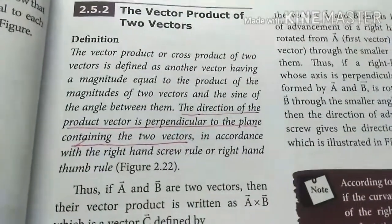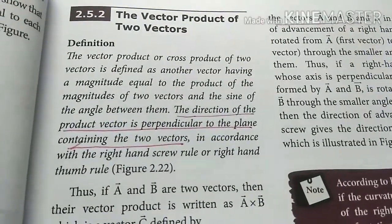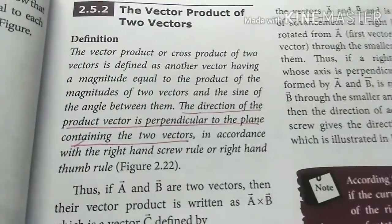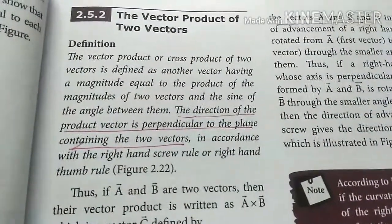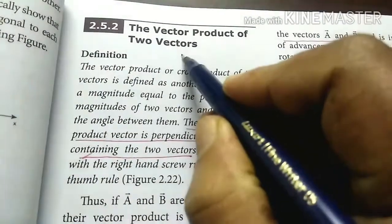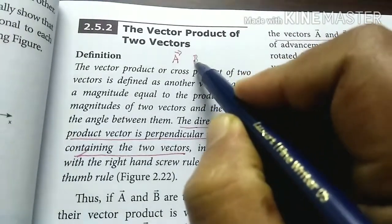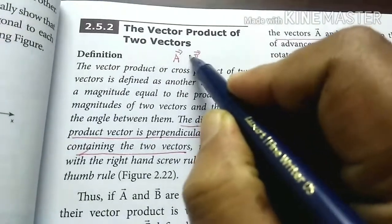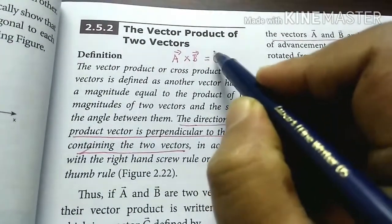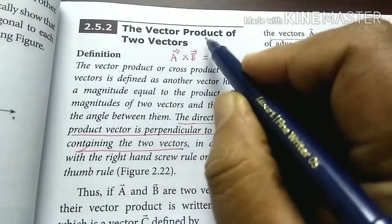Good morning students. Our next question is the vector product of two vectors. Here we multiply two vector quantities and the resultant is also a vector. Suppose A is a vector and B is also a vector. When we multiply these two vectors, the resultant is also a vector, and this product is called a vector product.